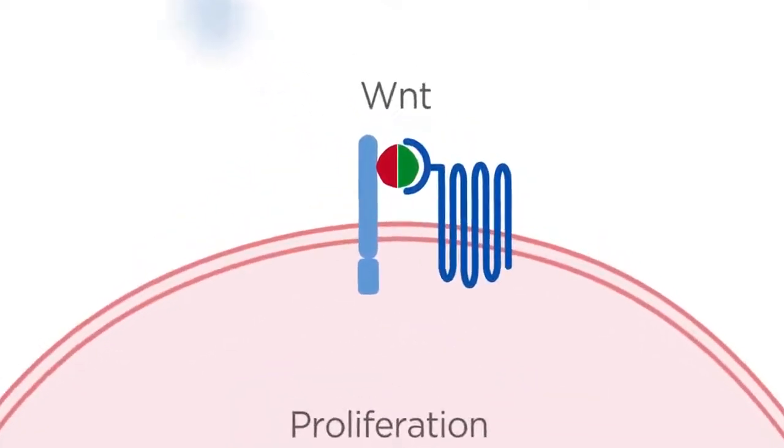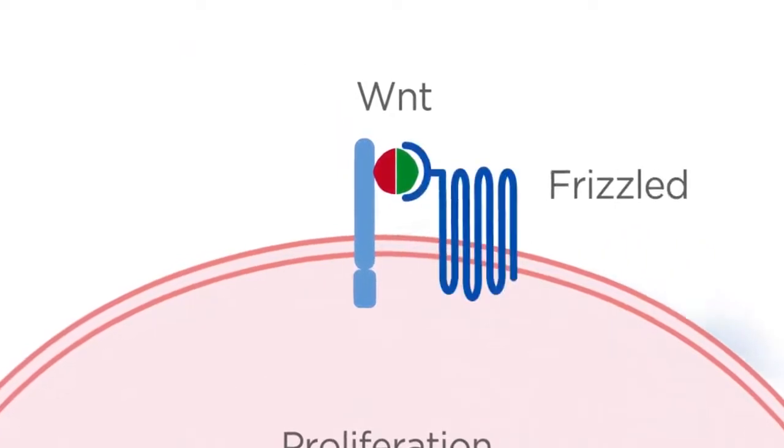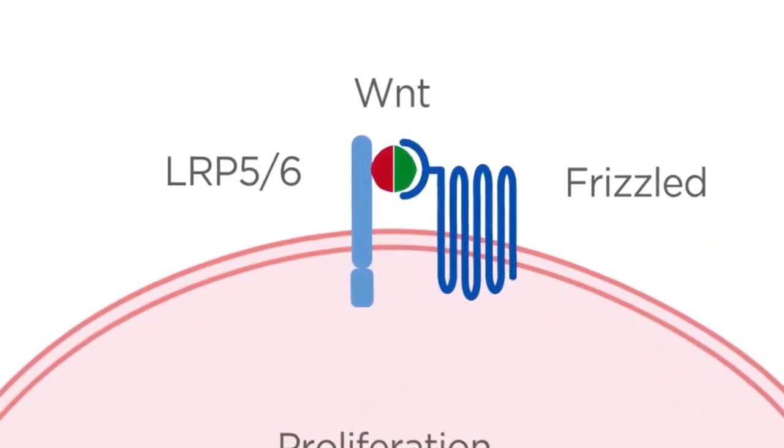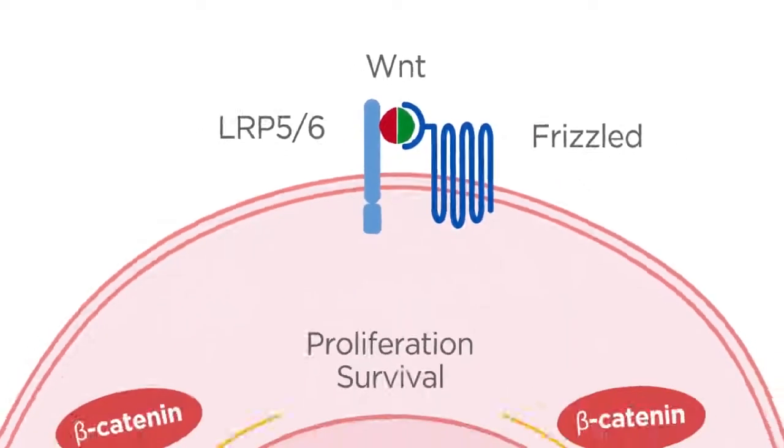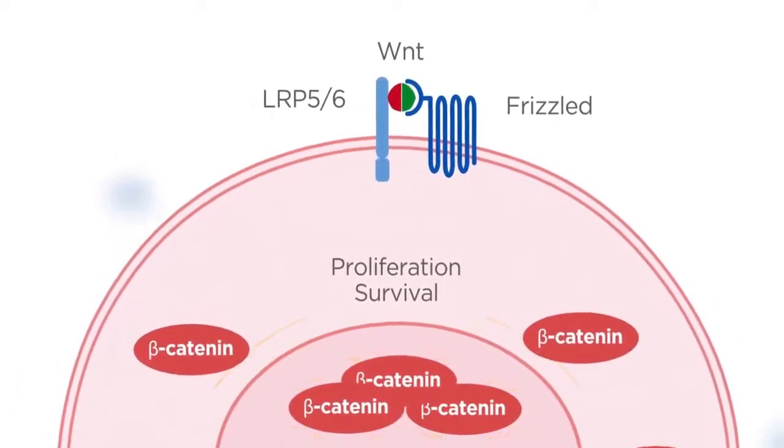Specifically, it is a trimeric complex of frizzled and LRP5 or 6 receptors, bound with Wnt-ligands that blocks the degradation of beta-catenin, allowing it to accumulate.